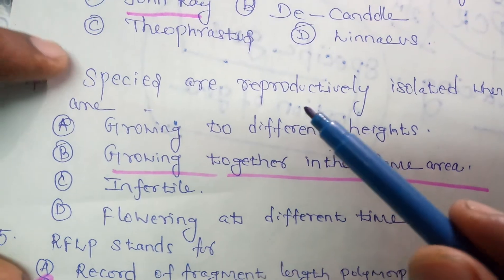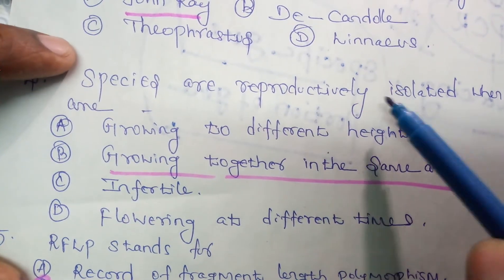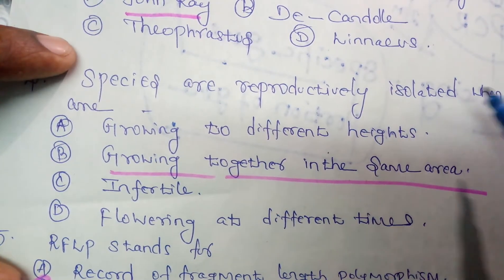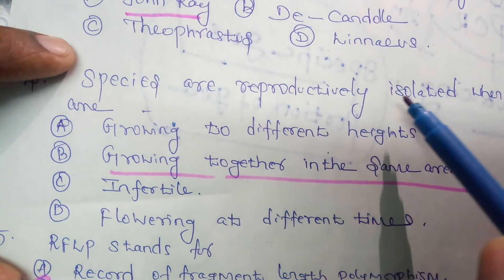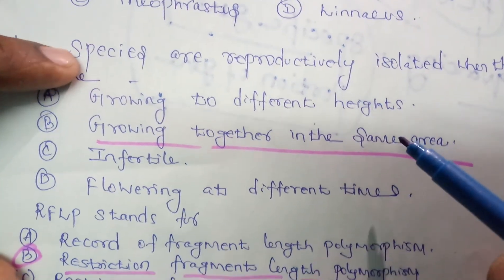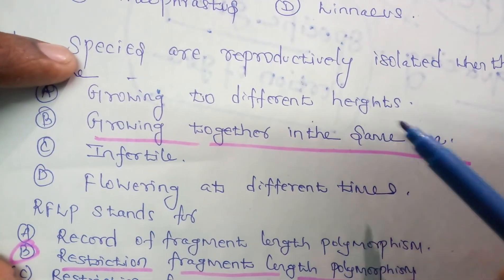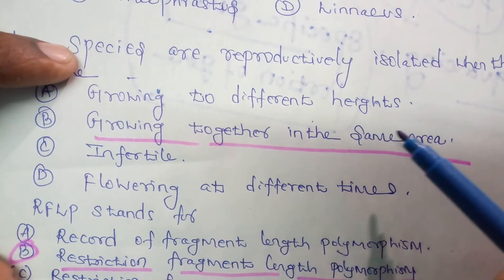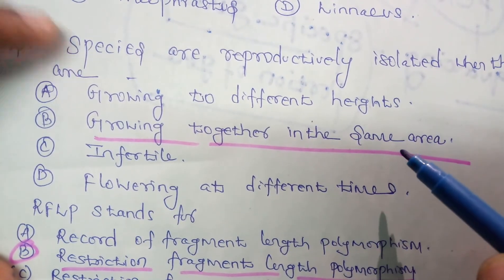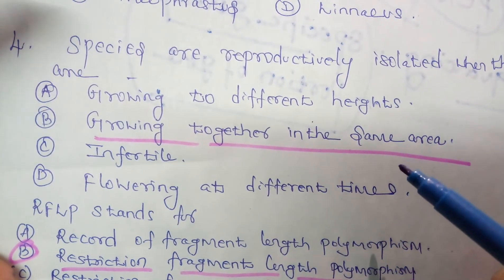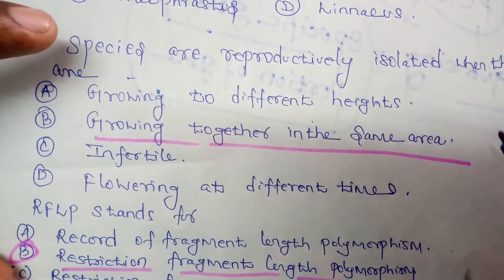When species are reproductively isolated, they are defined by their reproductive character. The option here is: species growing together in the same area, in one particular area, are reproductively isolated from each other.